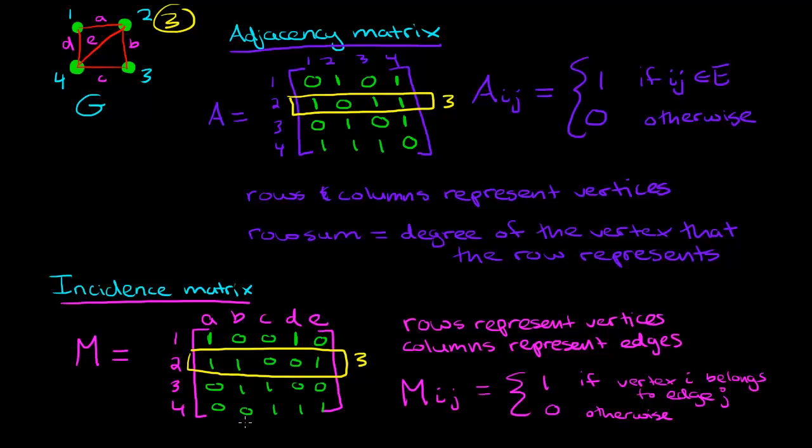Now something is different about the column sum though because columns represent edges. So in this case if you look down any column you'll notice that the number of ones is always 2. The reason for that is because the columns represent edges which means that every edge has two ends. So if I look at column D right here I say okay that means that the two ends of column D are vertex 1 and vertex 4.